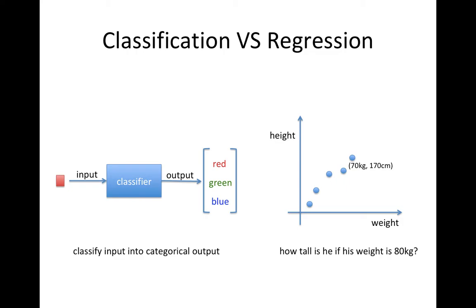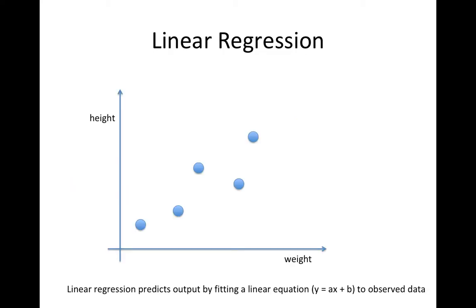The main difference is that classification always predicts in predefined categorical classes, while the regression output is continuous and numerical. For example, color classification is classification, and height prediction based on weight is regression.